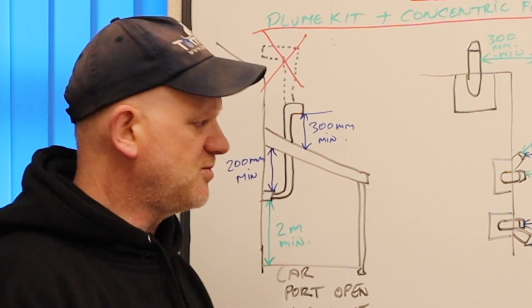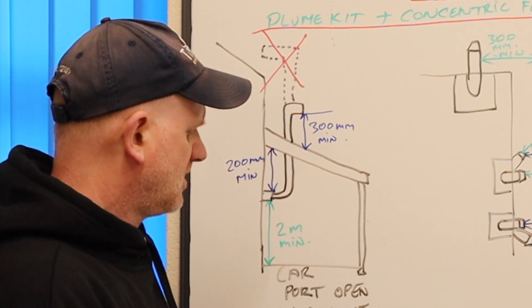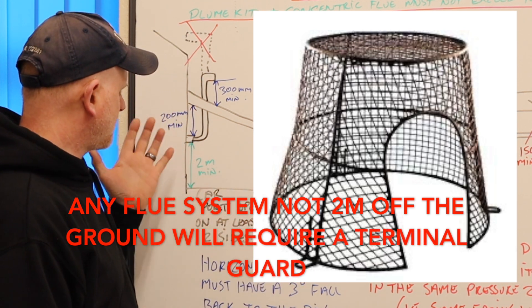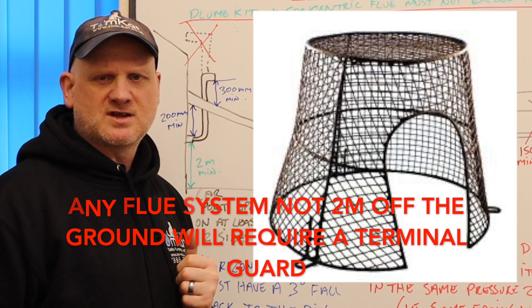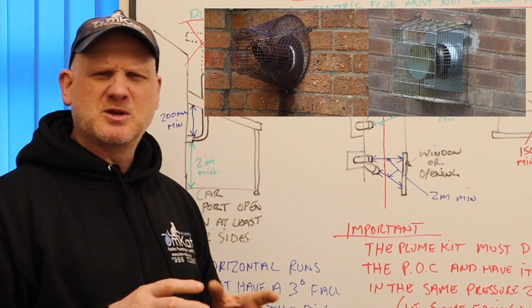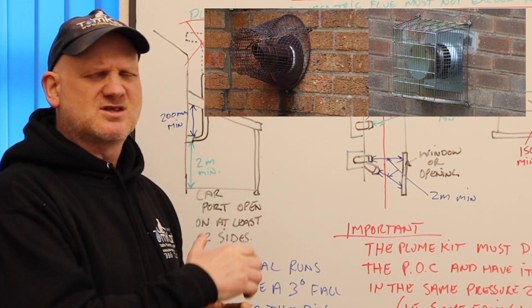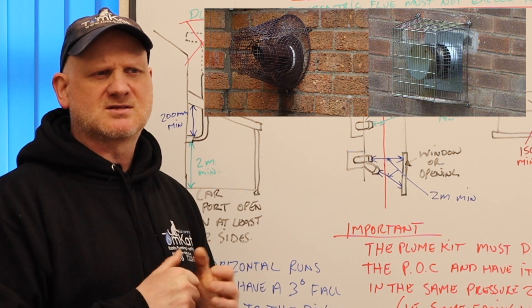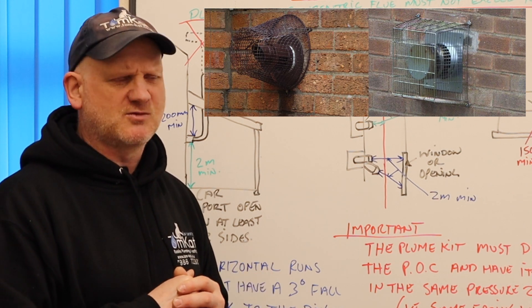If we're less than 2 metres off the floor with this system, then we'll still need to put a terminal guard. And the terminal guard is there to protect the flue system from damage. The terminal guard used to be there to stop people getting burned, but there's no heat coming from this now, so we're using the terminal guard because BS 5440 says we have to.